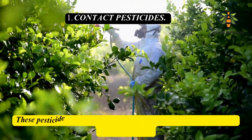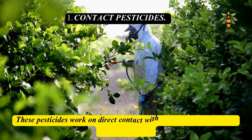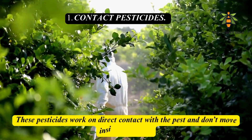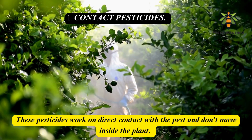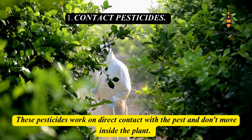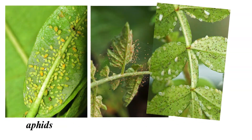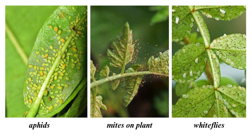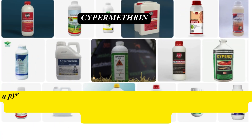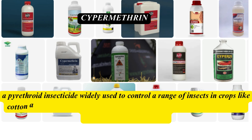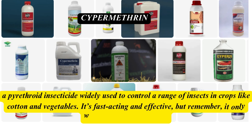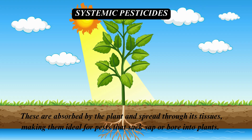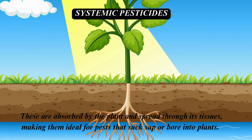First, let's talk about contact pesticides. These work on direct contact with the pest and don't move inside the plant. They're great for controlling pests you can see, like aphids or mites. A modern example is cypermethrin, a pyrethroid insecticide widely used to control a range of insects in crops like cotton and vegetables. It's fast-acting and effective, but it only works where it's applied.